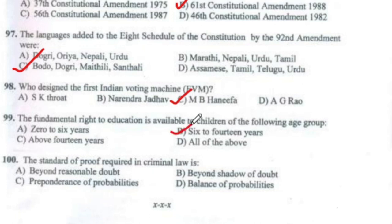Question 100: The standard of proof required in criminal law is Option A — beyond reasonable doubt. With this we end the discussion of the 2018 Punjabi University 3-year law entrance test examination. I hope this video helps you. Thank you.